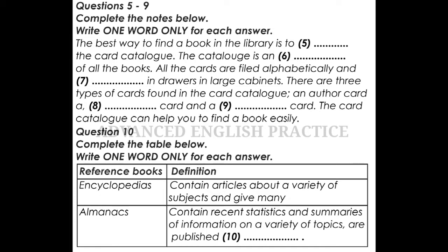For instance, if you wanted to find information about the moon, you would look in volume 8 of the encyclopaedia. Next is atlases. An atlas is a book of maps. It may contain many different kinds of maps. The maps in an atlas are often arranged alphabetically by country or continent. Almanacs are also a type of reference book. An almanac is a book that contains recent statistics and summaries of information on a wide variety of topics. It is published annually, and information is listed alphabetically by subject.